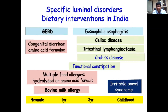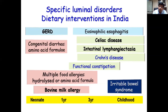Looking at specific luminal disorders where dietary interventions are being advised: bovine milk allergy is one of the disorders that presents early in childhood, and in the later part of childhood you will have things like irritable bowel syndrome, Crohn's disease, celiac disease, lymphangiectasia, and functional constipation. In the earlier part of childhood you can have GERD, congenital diarrheas, and food protein allergies.